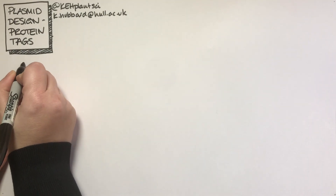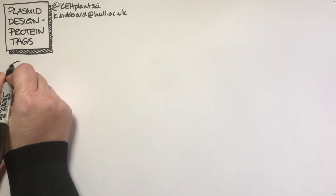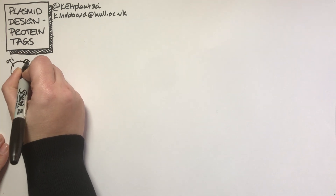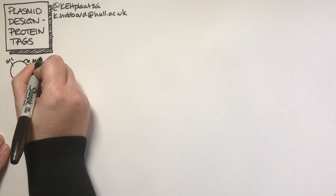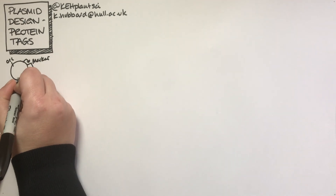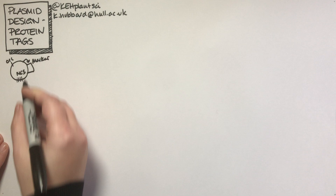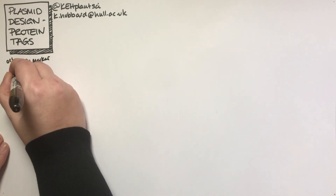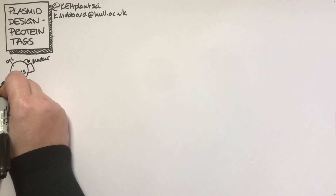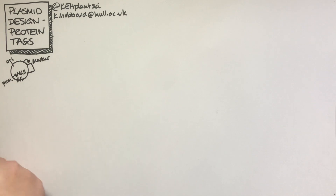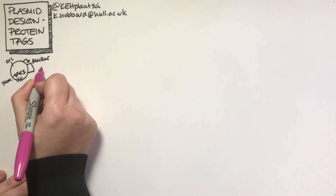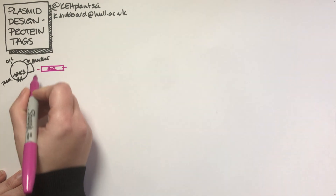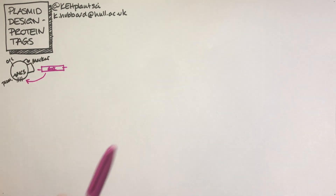What we usually have is some sort of vector with an origin of replication, a marker gene, and then some sort of multiple cloning site — that's a bunch of restriction sites next to each other. We'd usually have a promoter in there to drive the expression of a gene of interest, which we amplify by PCR and put into our plasmid via the multiple cloning site.